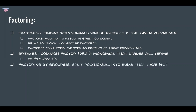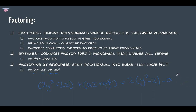Another method is factoring by grouping — you split the polynomial into groups that each have a GCF. For example, with 2y squared minus 2z plus az minus ay squared: grouping gives 2(y squared minus z) plus a(z minus y squared). Noticing that z minus y squared is the negative of y squared minus z, we write negative a instead, so both groups share (y squared minus z). Anti-distributing gives the final answer: (y squared minus z)(2 minus a).